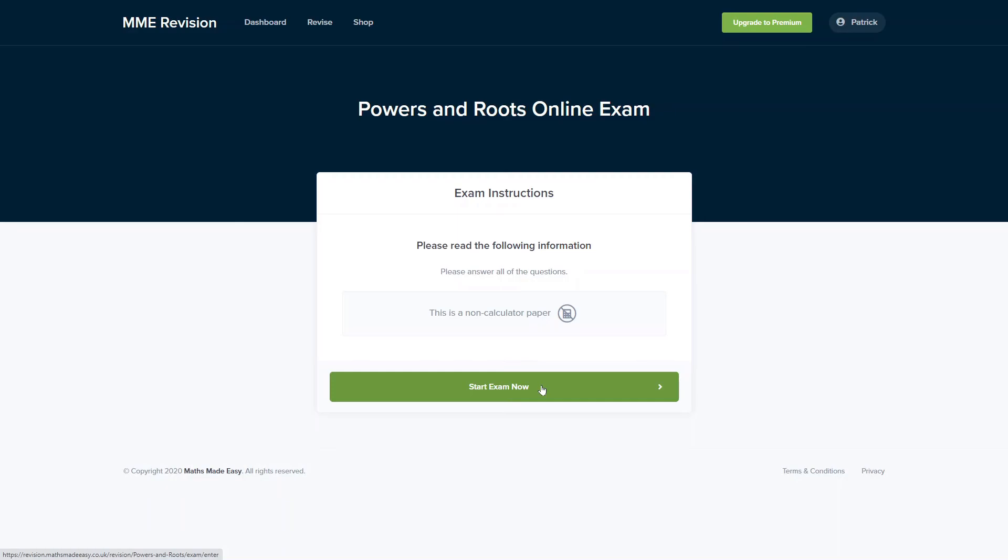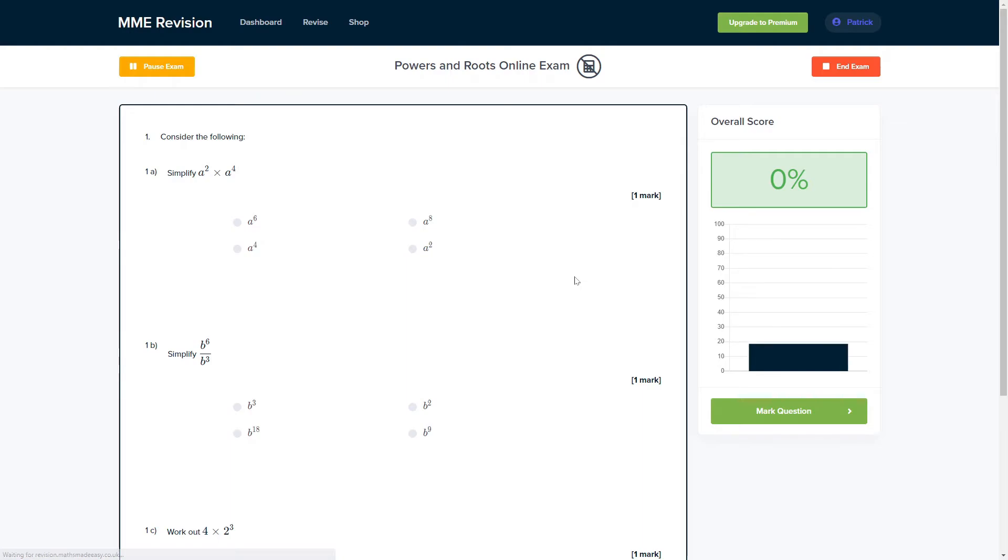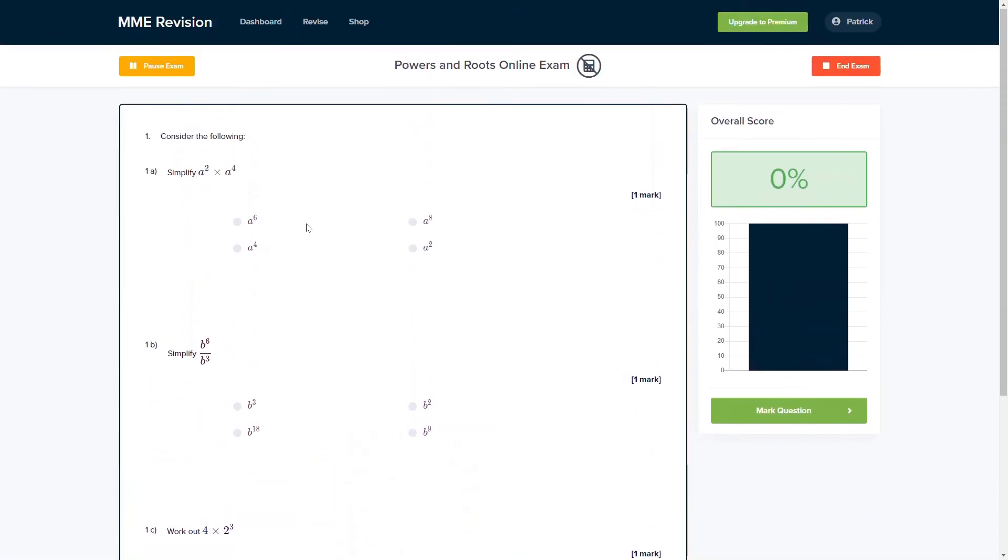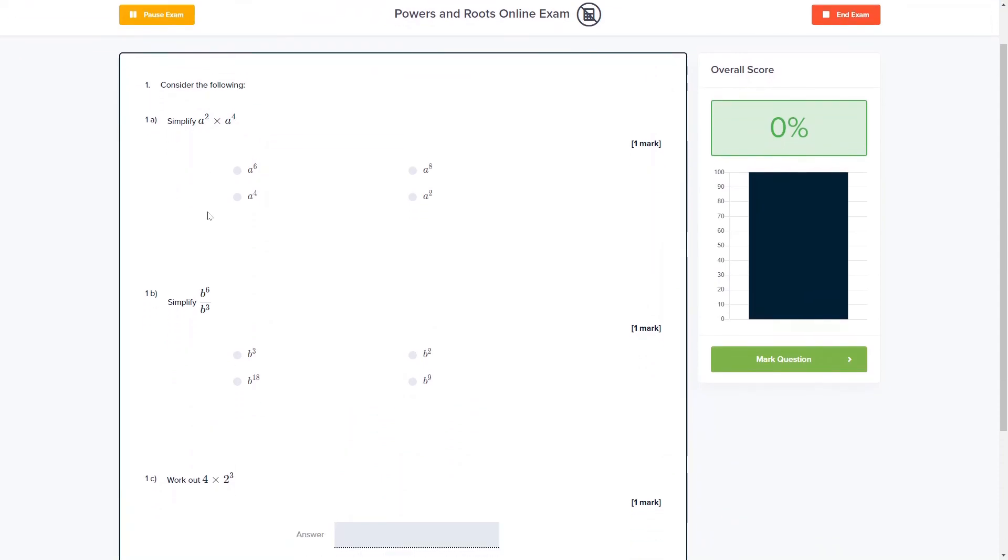If you're feeling good about this topic and you want to practice some exam style questions, you can do so with our online exam. This is available through our revision platform. And if you take the test, you'll find loads of different questions to have a go at, all of which are instantly marked so you can keep track of where you're going wrong and where you can improve for your exam. So if you're interested, you can click the link below and it will take you straight there.